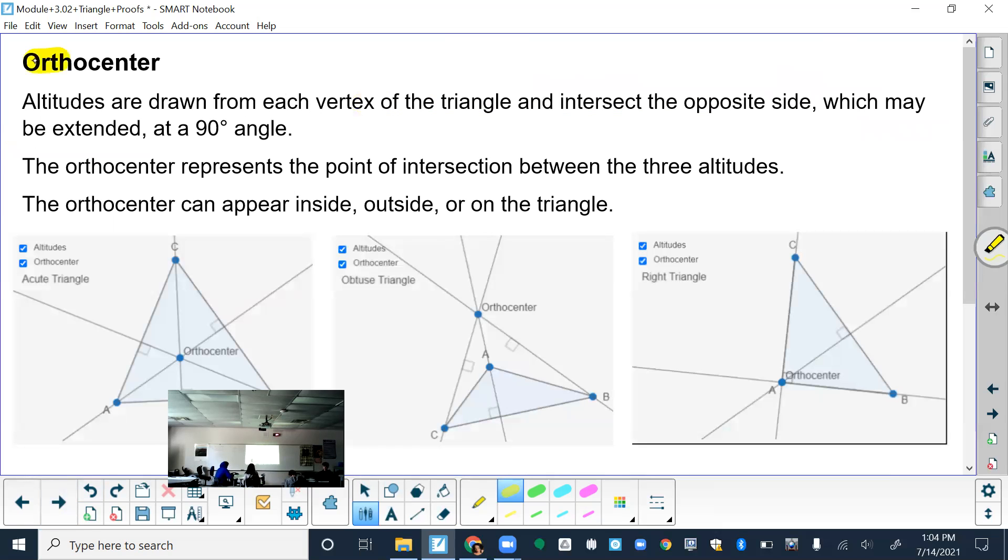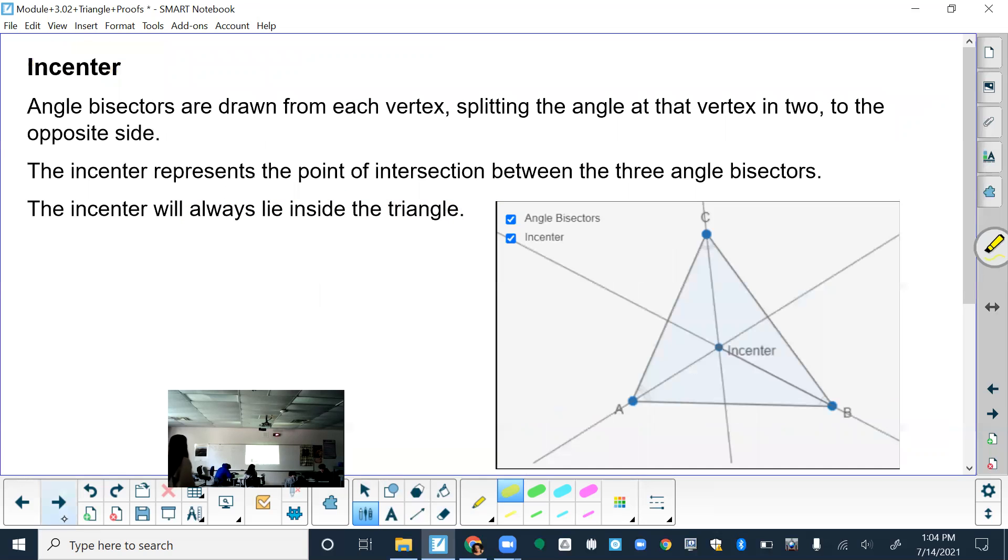Then we have orthocenter. So here's how to draw them. It represents the point of intersection between three altitudes. It could be inside, outside, or on the triangle.